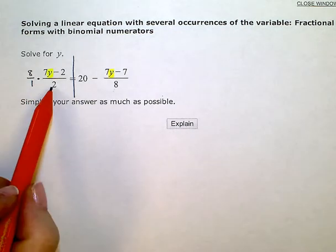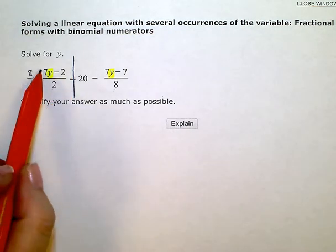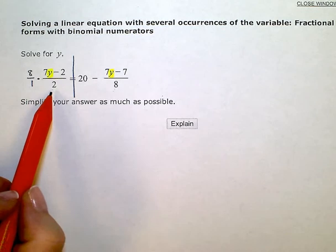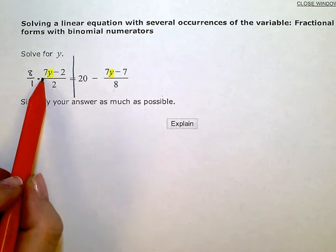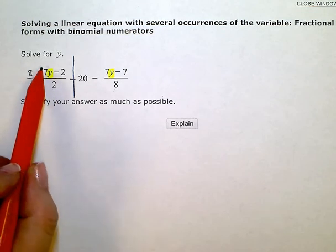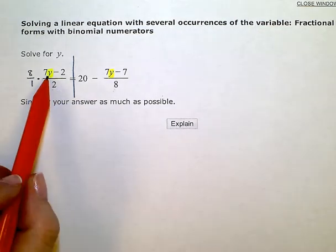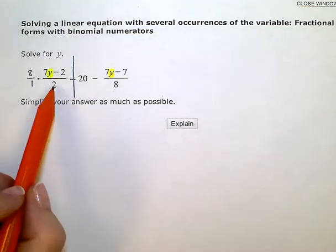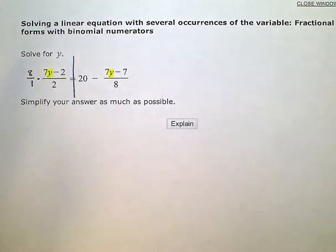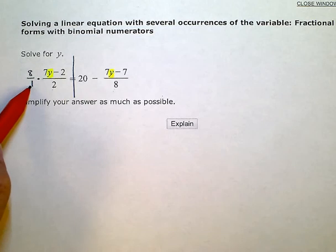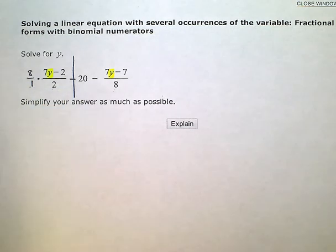On this side, algebraically, this is just one big term right now. The big fraction bar is acting as a grouping symbol. It's locking all of these expressions, the 7y, the negative 2, and the 2 together as one big term right now. I have to multiply that term by 8, and I'm going to put it over 1 since I have a fraction, just to keep numerators lined up with numerators and denominators lined up with denominators.